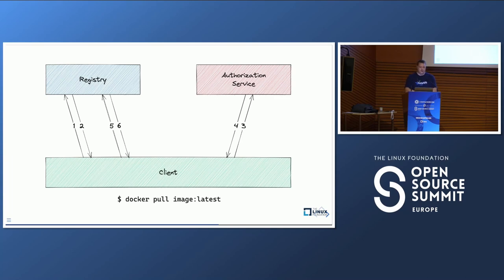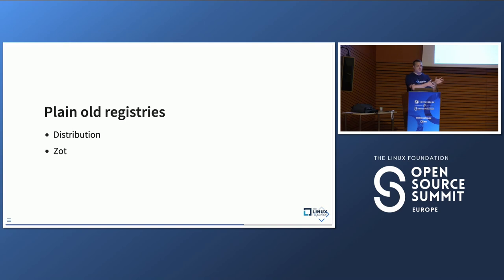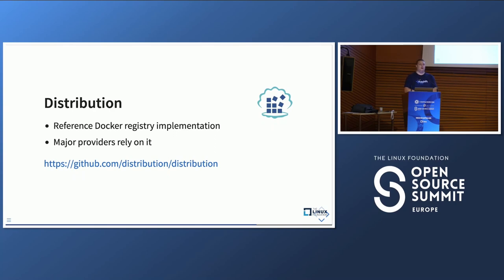That's how the Docker registry authorization spec works. Now let's look at the building blocks for our own private container registry. From the CNCF landscape, two registries fall into the plain old registries category. The first is distribution — the reference Docker registry implementation that Docker initially built. Most providers rely on this project: Docker Hub, GitHub Container Registry, and Harbor all use it. It has features like CDN support for more efficient image distribution, and it implements OCI while being backwards compatible with the old Docker V2 registry spec.